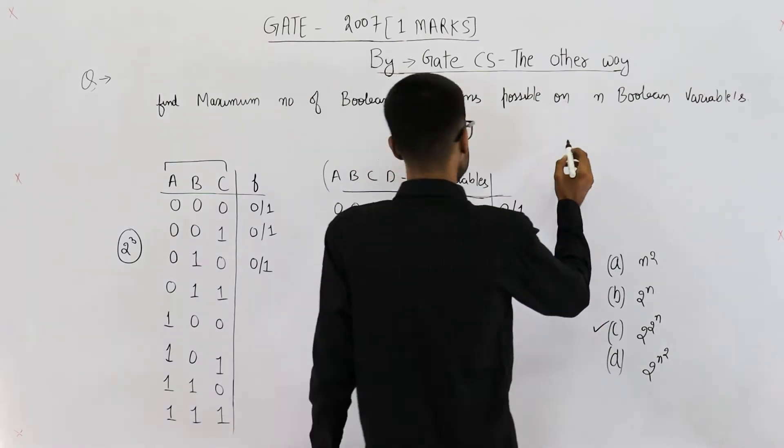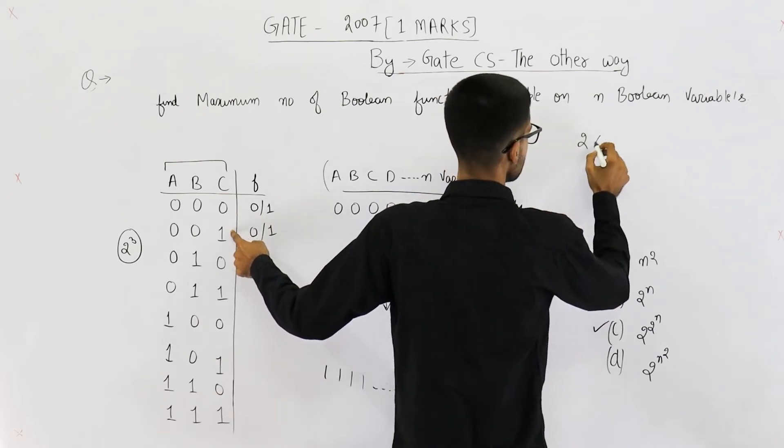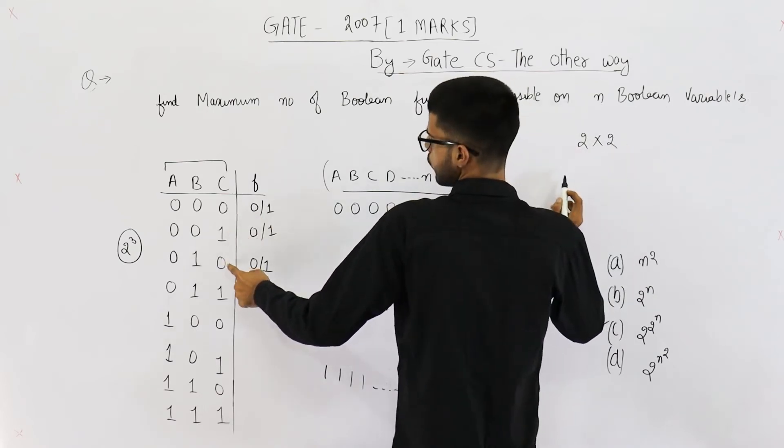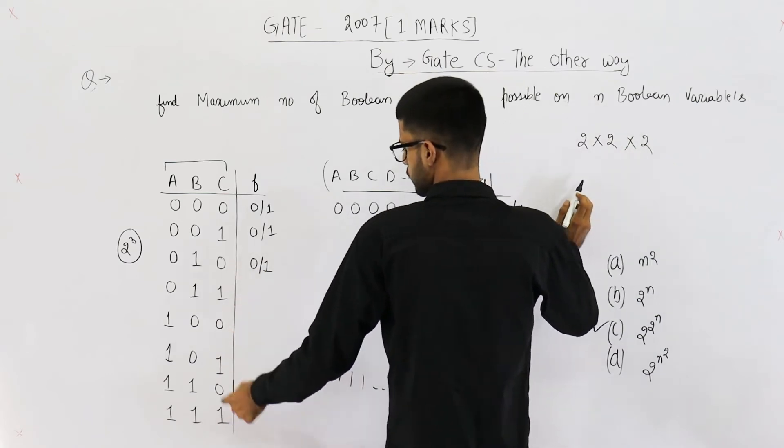That means for this first input, you have two possibilities. For this one also, you have two possibilities. For this one also, you have two possibilities. So on.